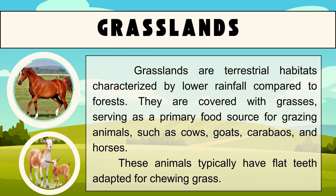The second type of terrestrial habitat is the grasslands. Grasslands are terrestrial habitats characterized by lower rainfall compared to forests. They are covered with grasses, serving as a primary food source for grazing animals such as cows, goats, carabaos, and horses. These animals typically have flat teeth adapted for chewing grass.